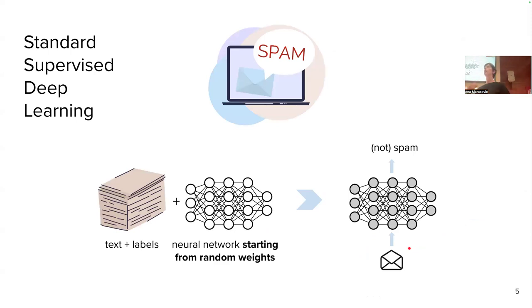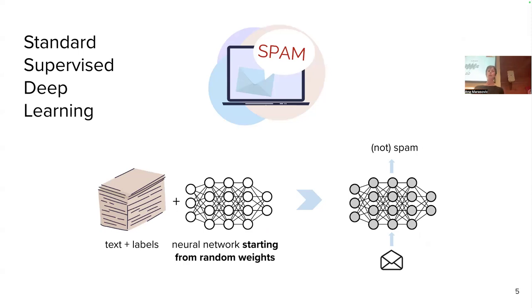Just continuing on that motivation: in standard supervised machine learning, we have labeled data. We start with some text that has labels. In your homework, you work with sentences from movie reviews labeled as positive and negative. When you train your neural networks in your second assignment, you start with randomly initialized parameters for your linear layers, which are just random numbers in matrices that you then tweak using gradient descent. After many epochs, many steps of gradient descent, you get a neural network whose weights are specialized for that task, so at prediction time you can get, for example, whether an email is spam or not.